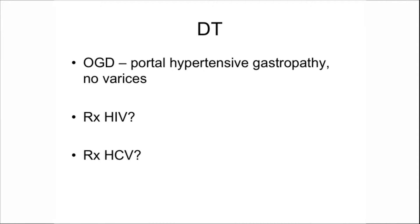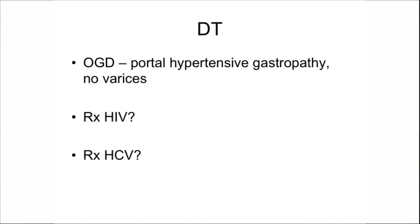He did have an upper GI endoscopy, and there were no oesophageal varices — just some portal hypertensive gastropathy. So we were sure this man had a little bit of portal hypertension, but he was very lucky there were no varices. The next question is: treat his HIV or treat his hepatitis C? He's got a CD4 count of 120 and a viral load of 120,000. We opted to start this man on antiretroviral therapy first.